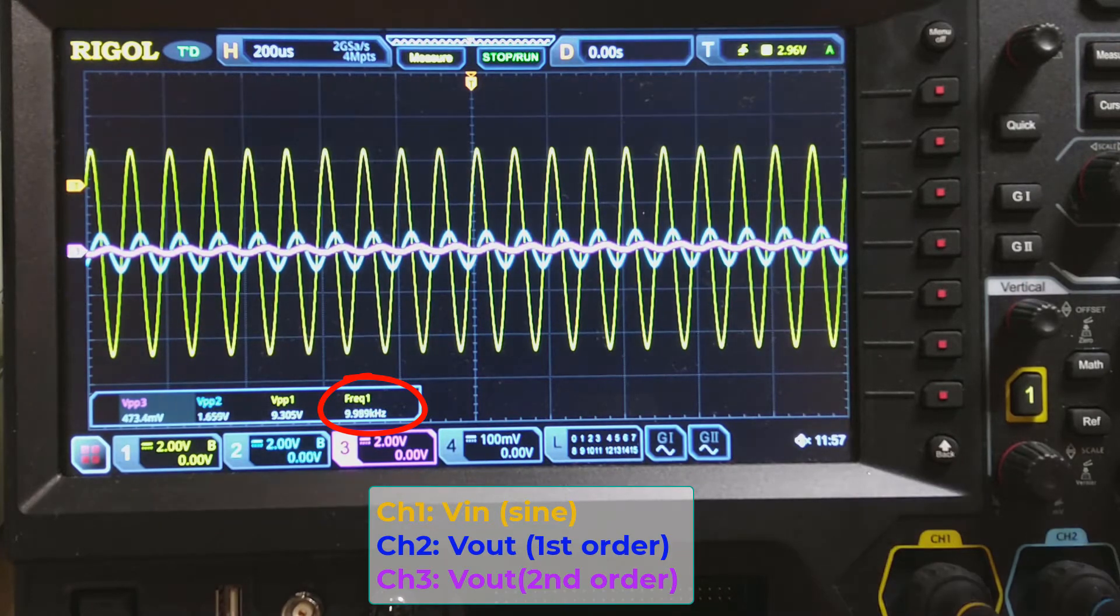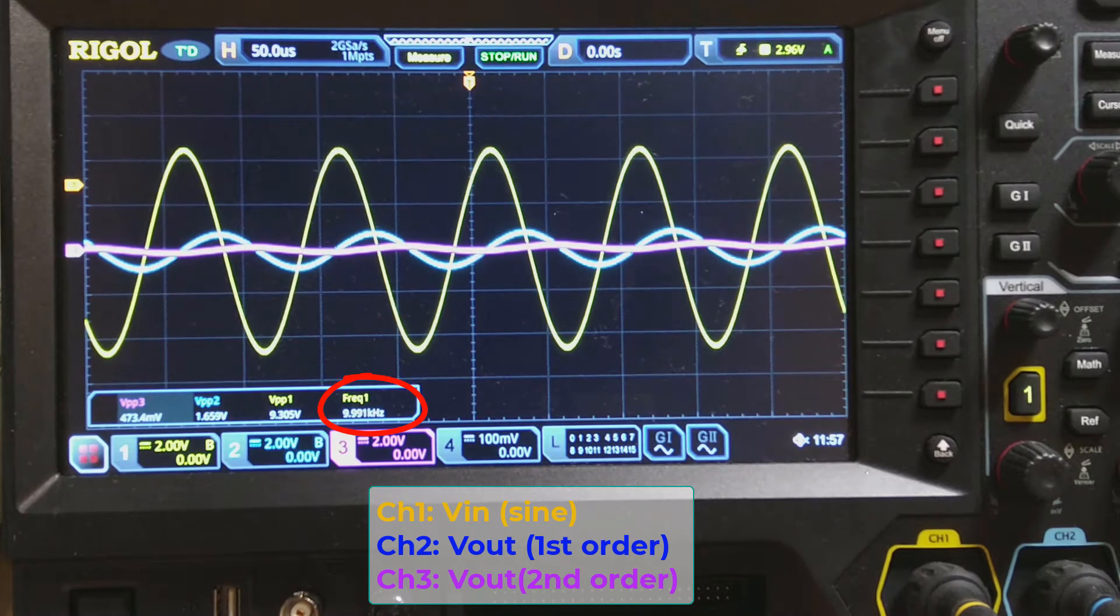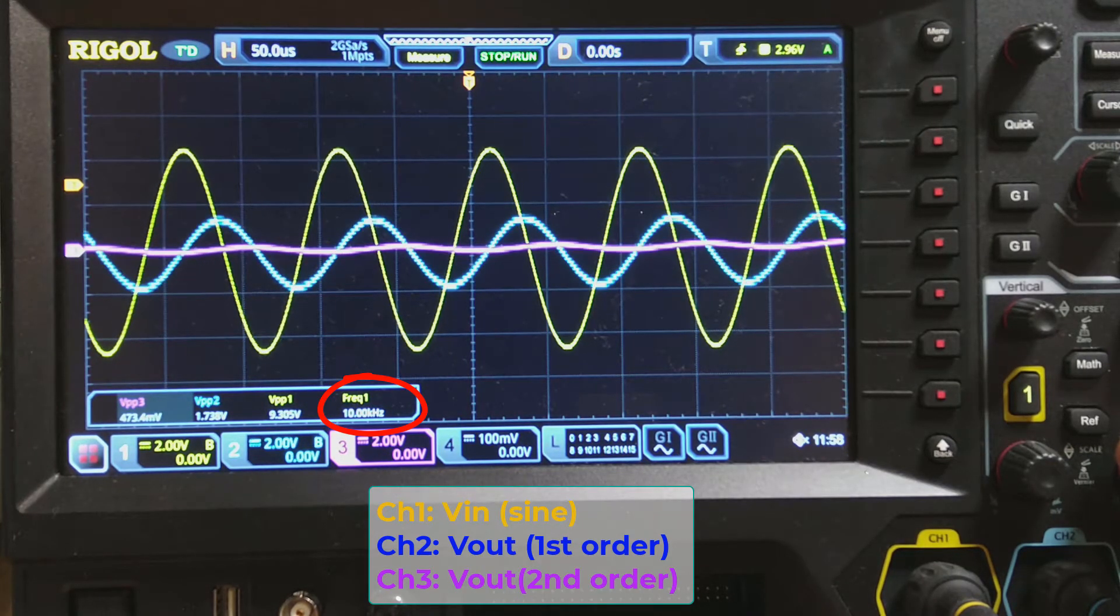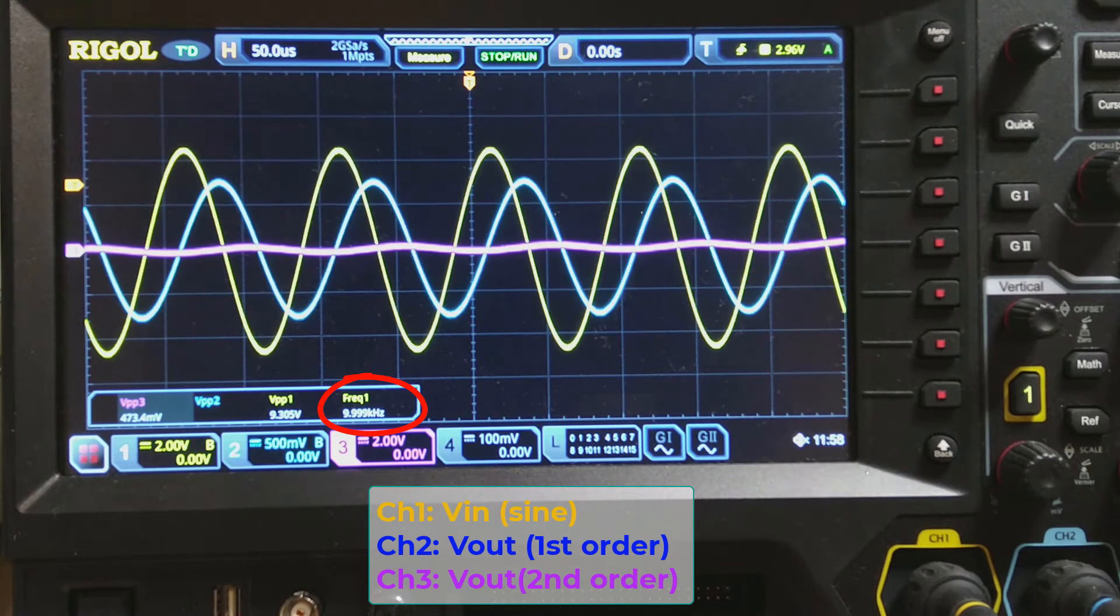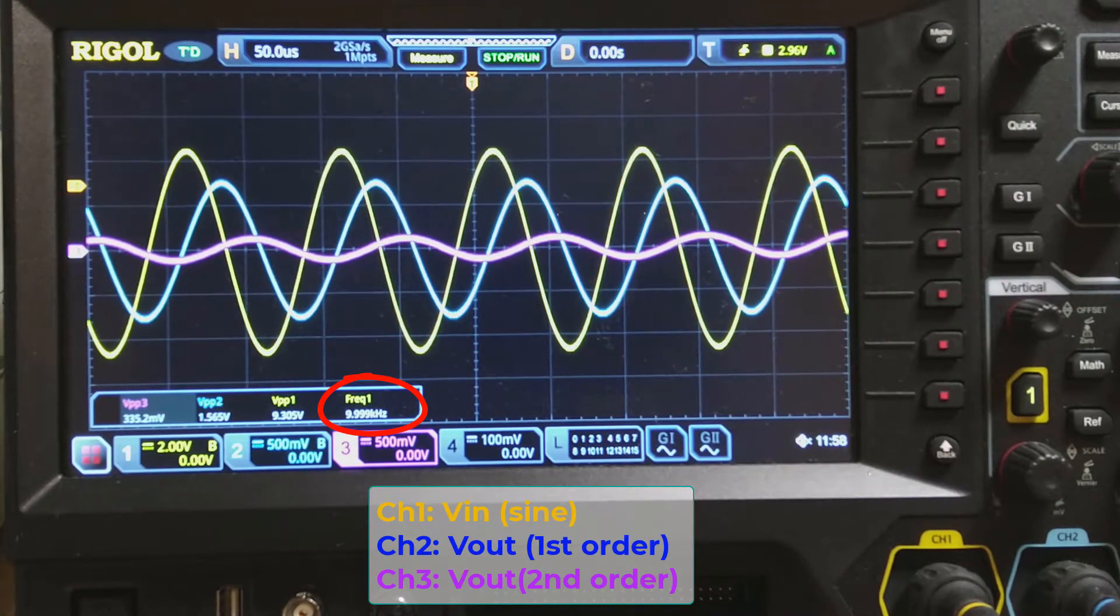As I gradually increase the frequency, you can see the difference between channel 3 and channel 2 becomes more significant. The phase difference between channel 2 and channel 1 is almost 90 degrees.